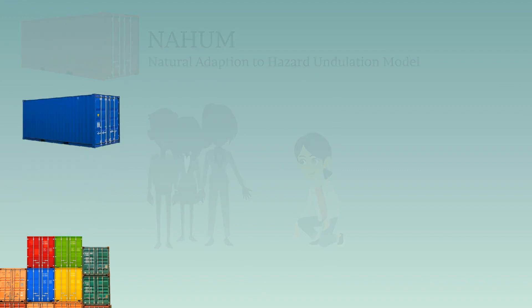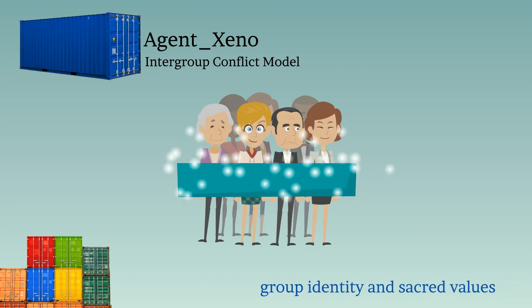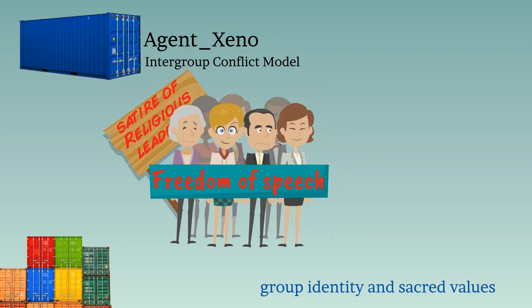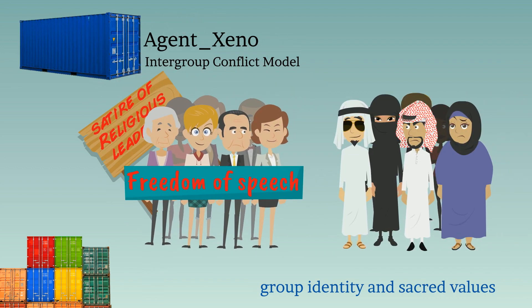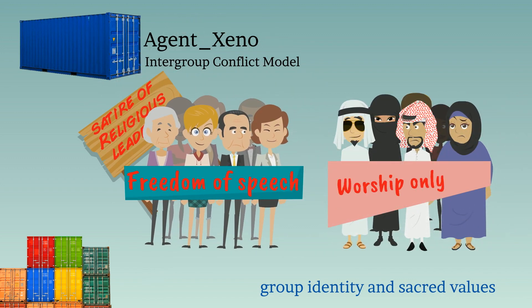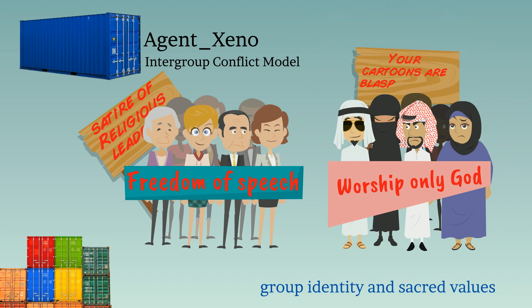Agent Zeno simulates intergroup conflict. It builds on academic studies and theories about group identity and sacred values, helping us think about what sort of conflicts can arise — even violent conflicts — when two neighboring groups have very different values and ideas about who they are.